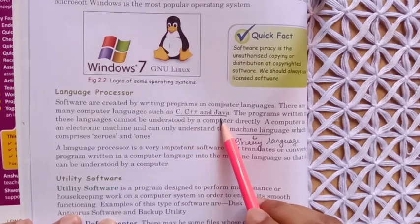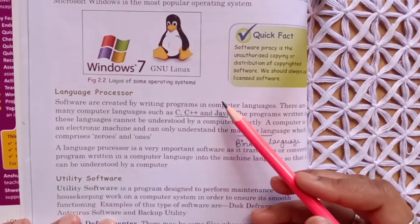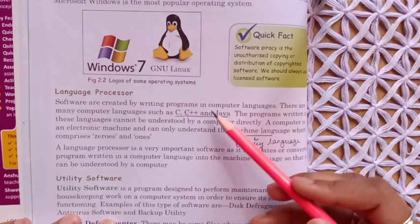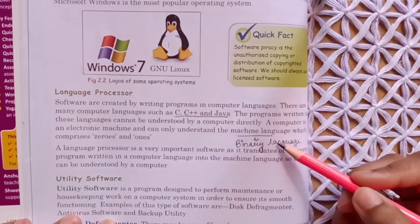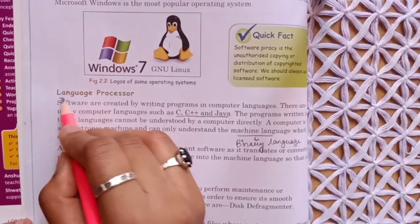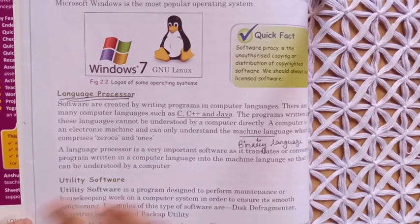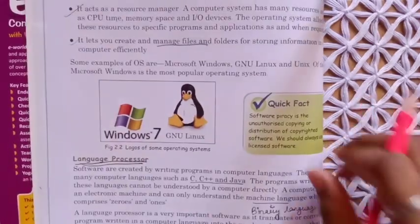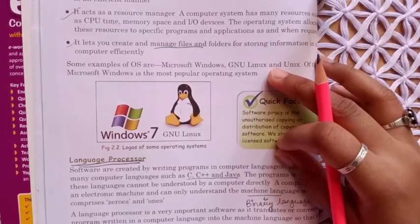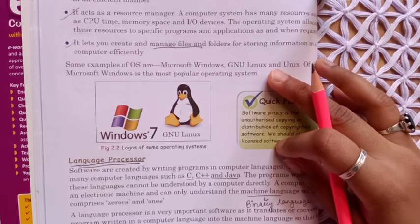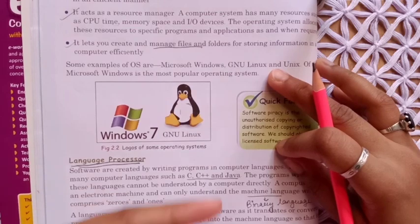Programs in C, C++, and Java are created by humans and contain keywords that humans can understand, but a computer cannot understand these. To change them into the computer's language, we need a software called the language processor. So far we have read: what is software, the types of software — there are two main types, system and application — and inside system software there are three types, of which we have covered operating system and language processor.